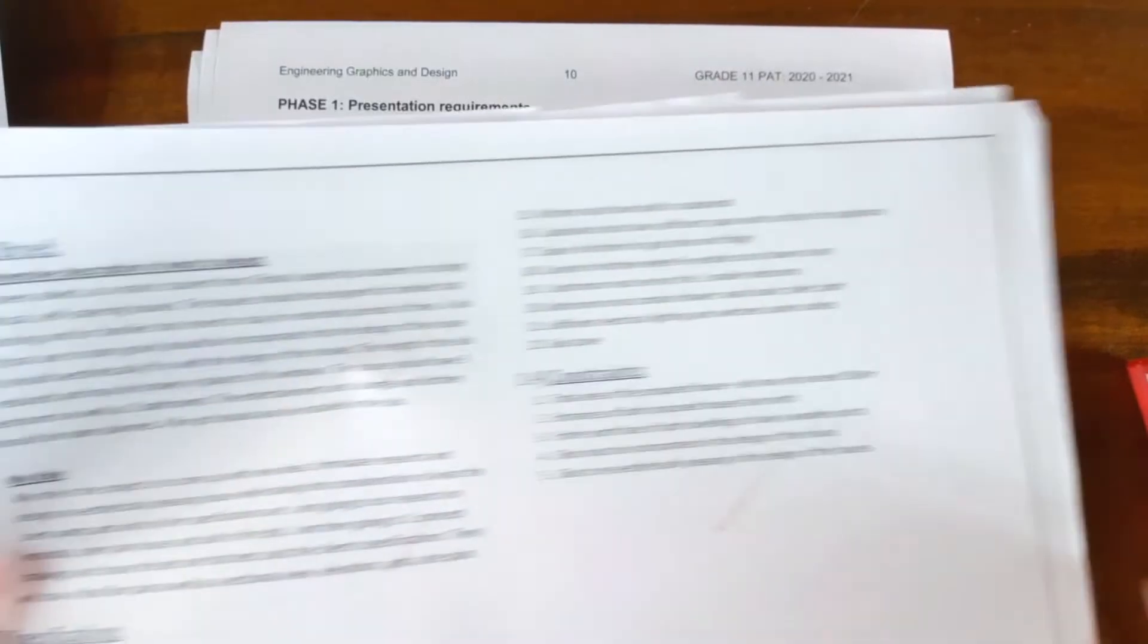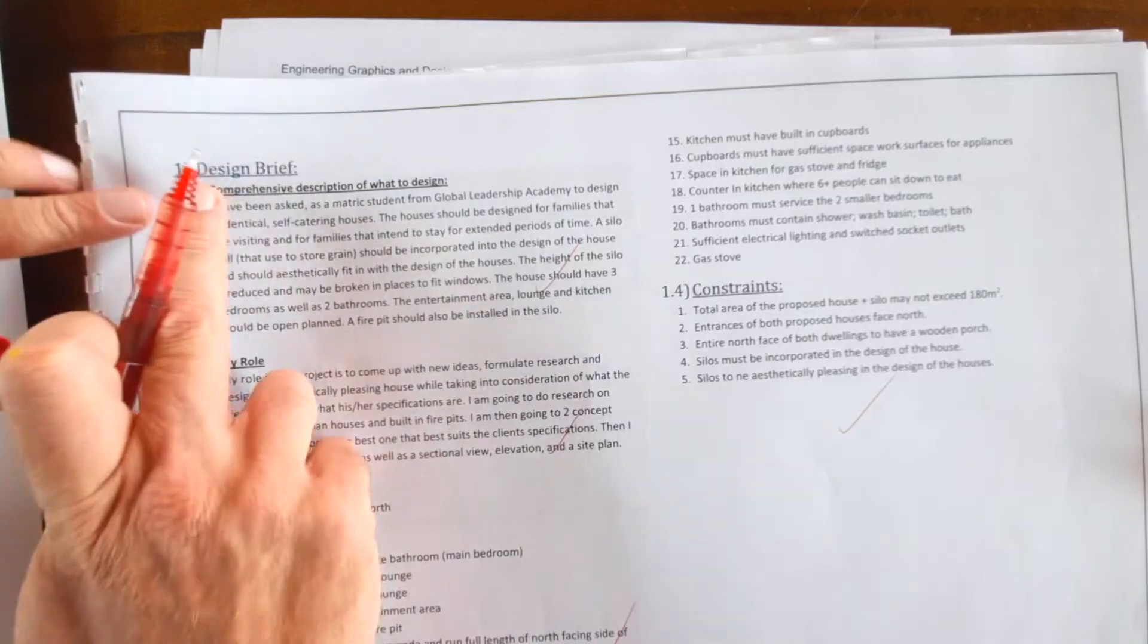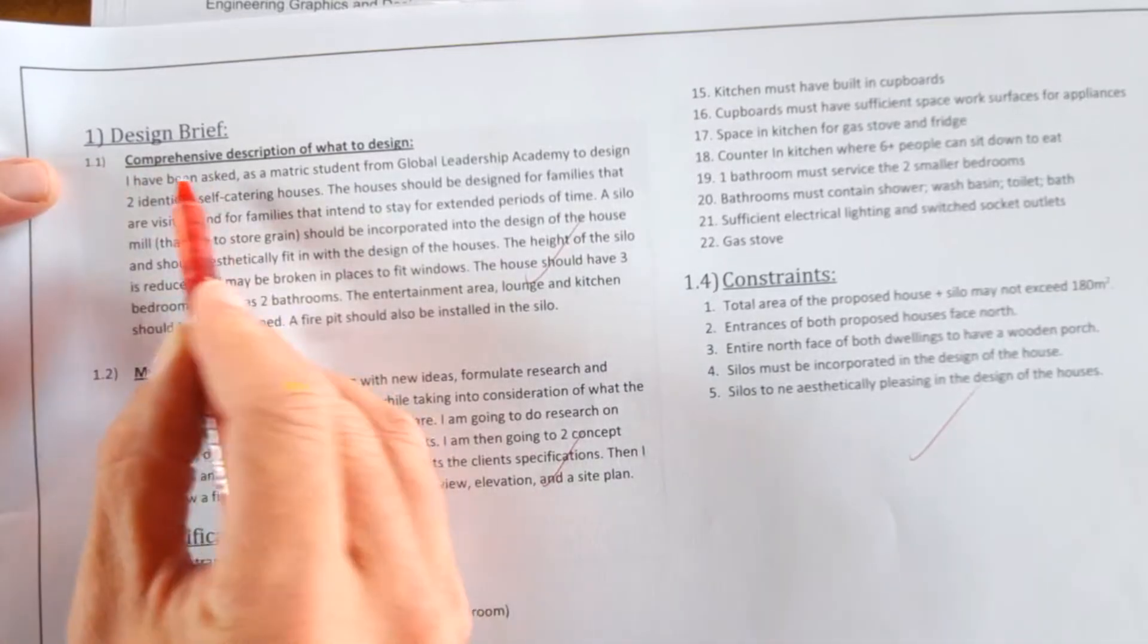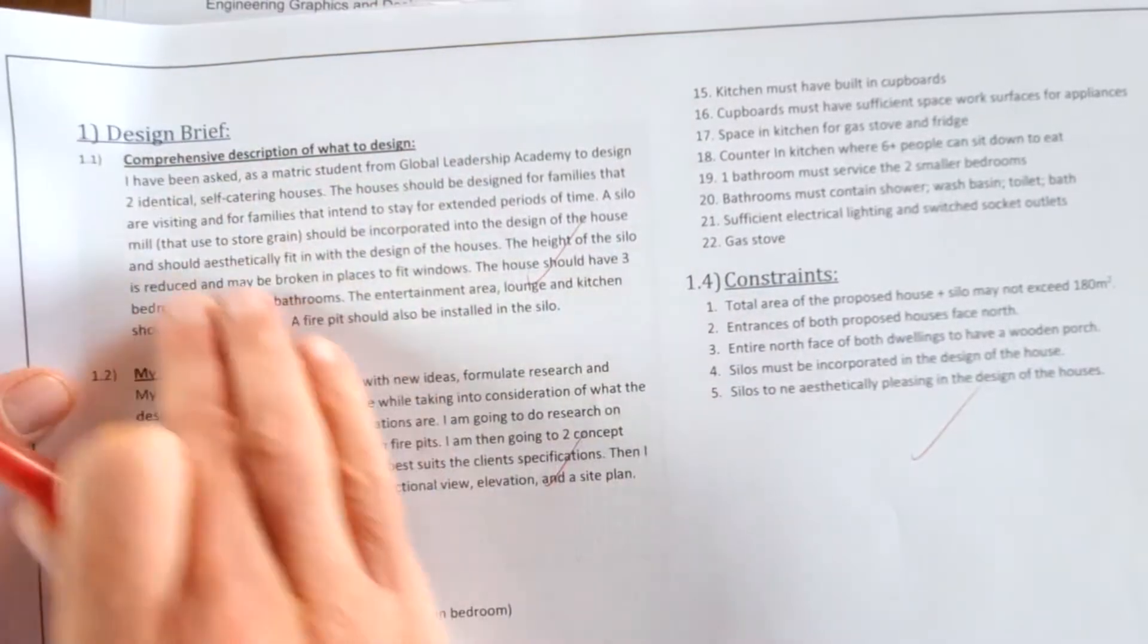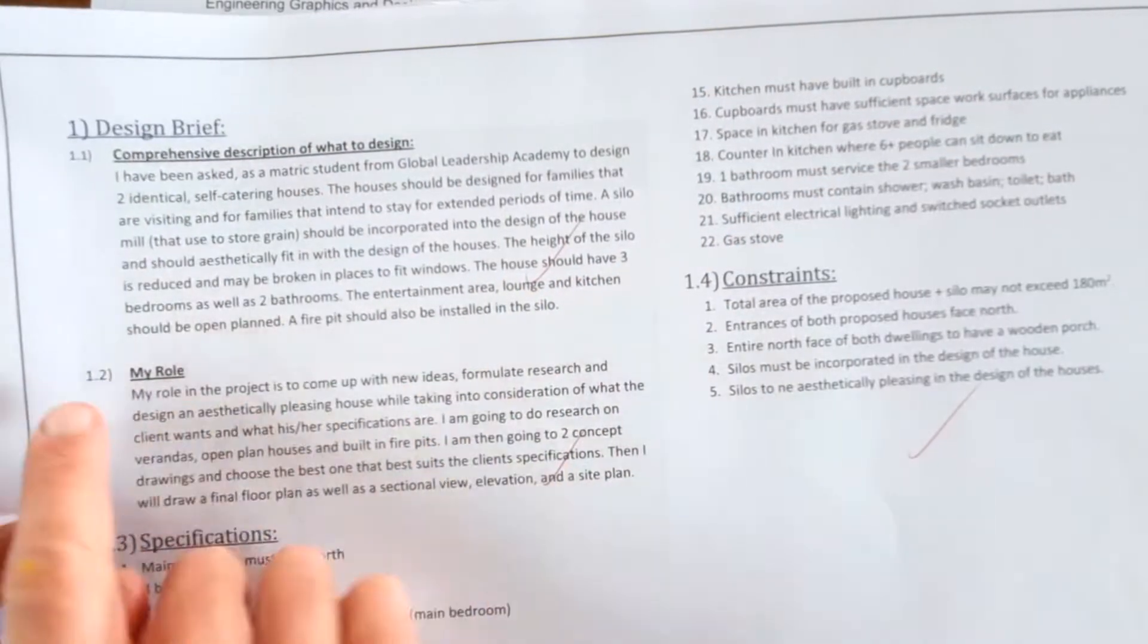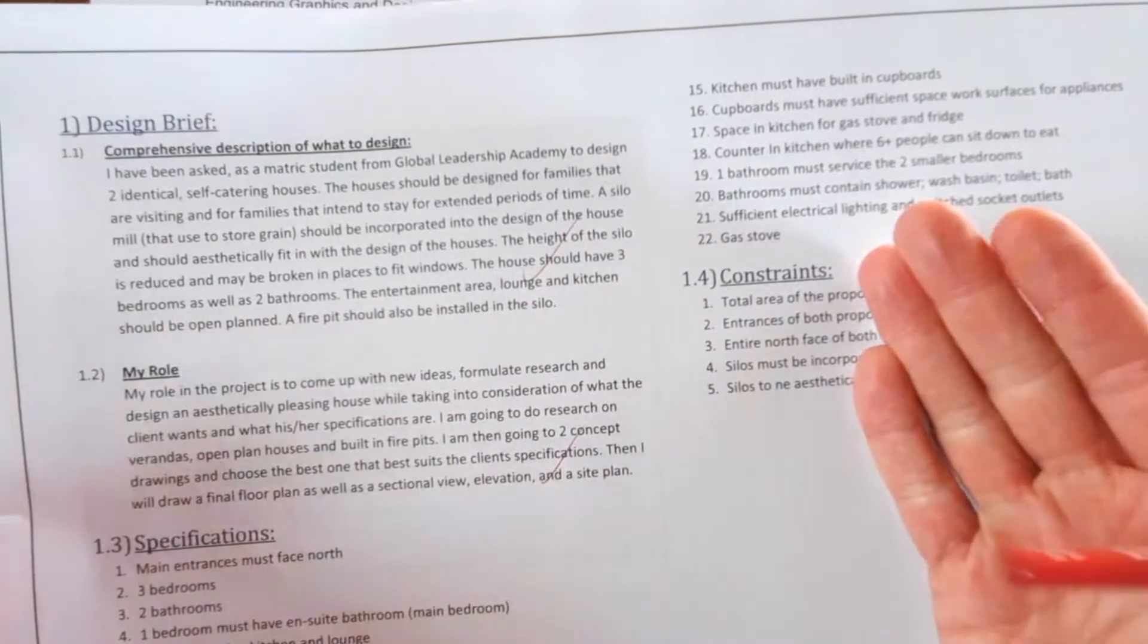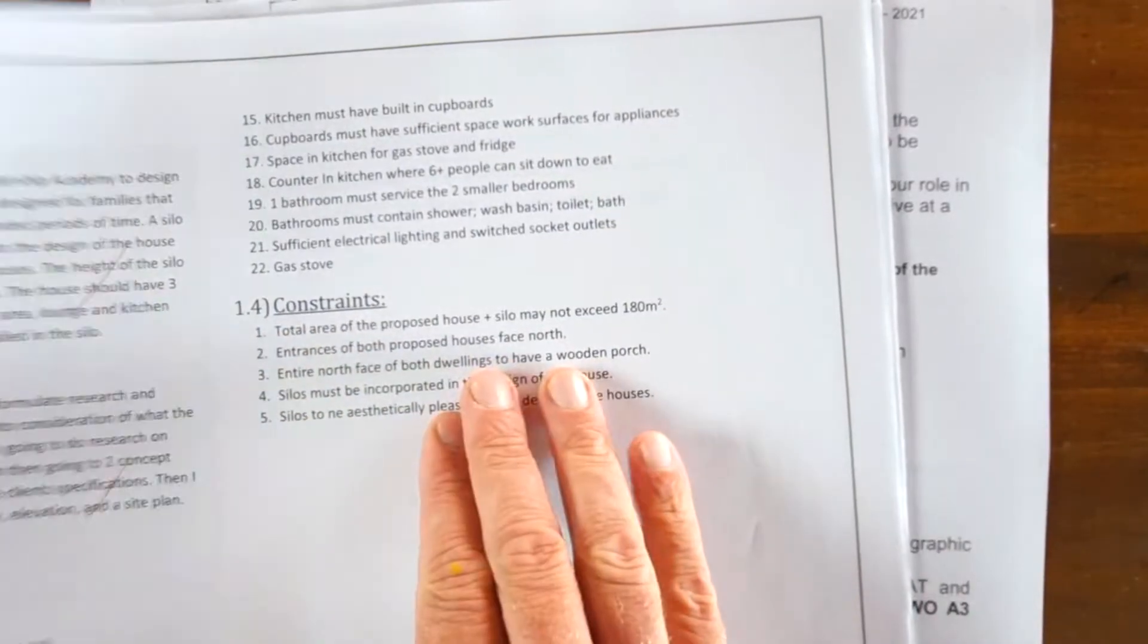Now this is a previous year's work, so you can't copy this word for word, but it actually shows you in detail. You're going to have a clear heading on this page. Your first paragraph must be numbered 1.1, and you can give it a heading: comprehensive description of the problem or what to design. Then you're going to give a paragraph in your own words explaining what is that scenario. The second paragraph, 1.2, will be your role, and here you're going to elaborate on the actual process that's going to be followed. After that it's going to be your specifications, which will be 1.3, and your constraints, 1.4, which I'm going to talk you through in a moment.